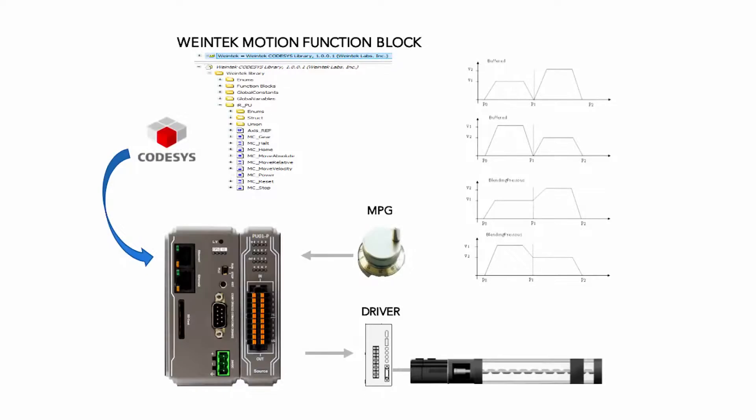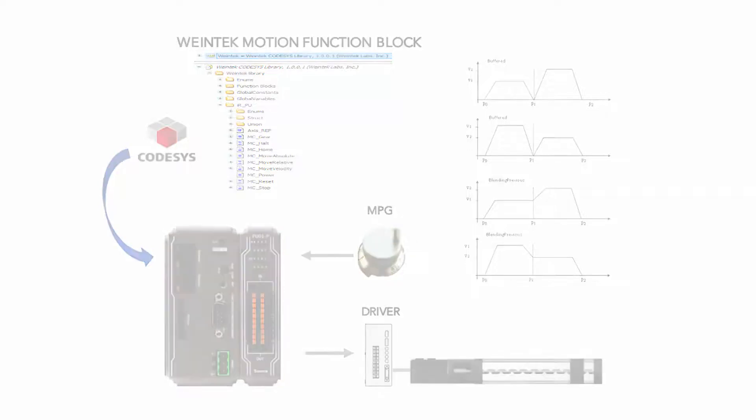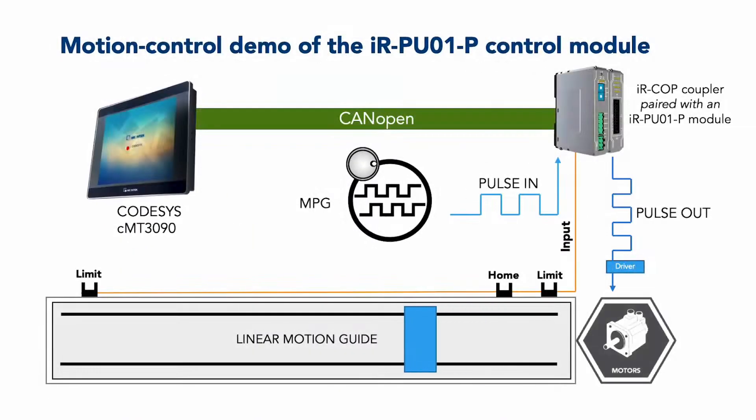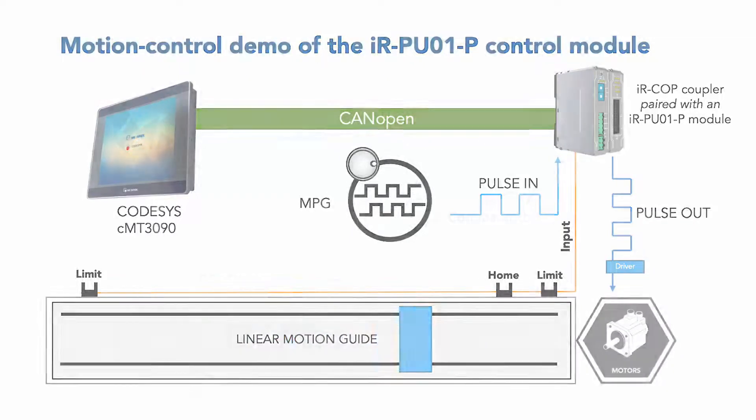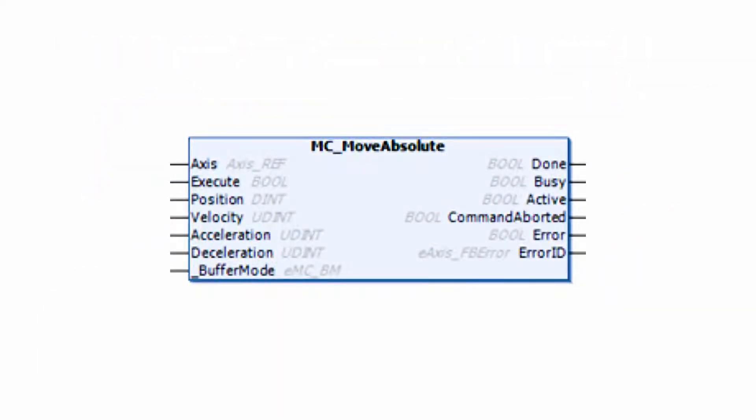The IRPU01P includes high-speed digital I/O to support applications needing quick response. For example, input can be used with sensors for limit detection and homing, and output can be set as pulse width modulation or work as a digital cam switch.